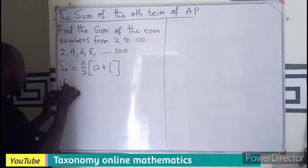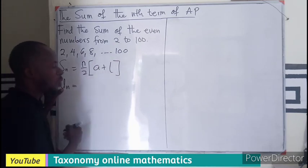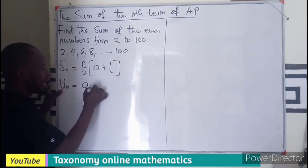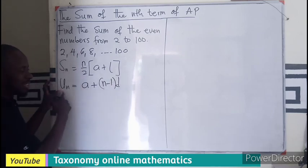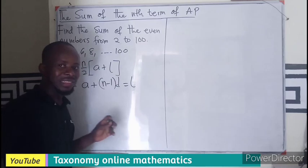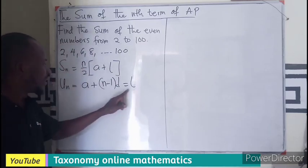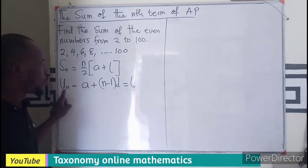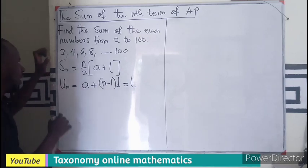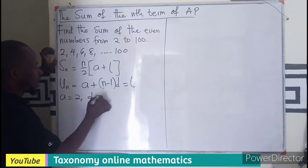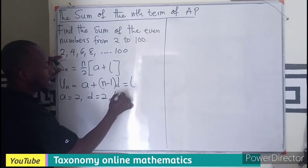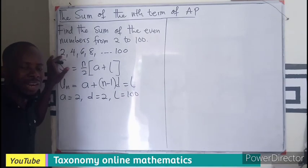So how do we find out that? We know that nth term, to find the number of terms in a sequence is given by a plus (n minus 1)d, which we know this is the same as the last term. The last term is the same as the nth term of a sequence. So if that's the case, I know from this my a is going to be 2.